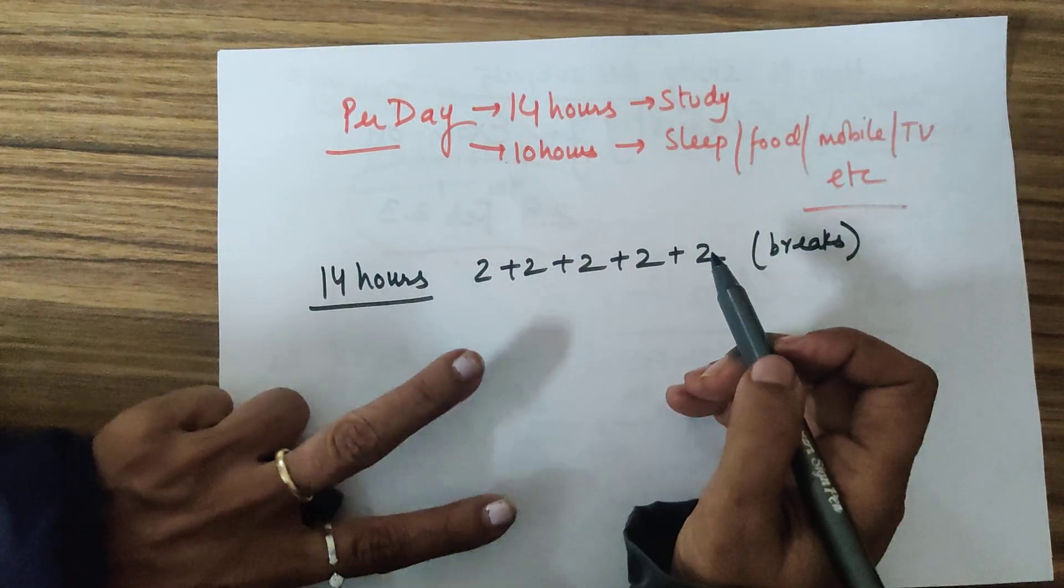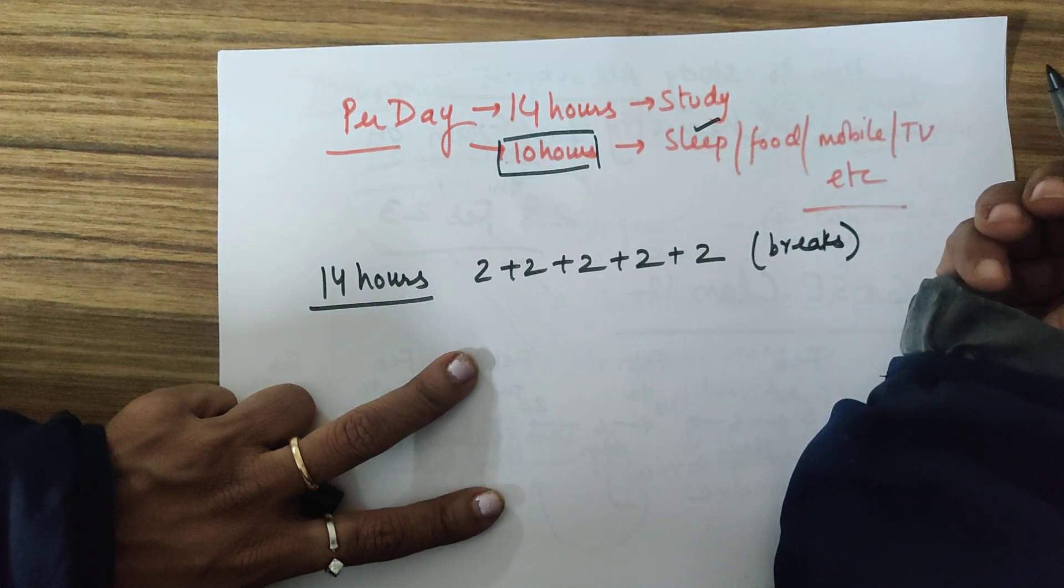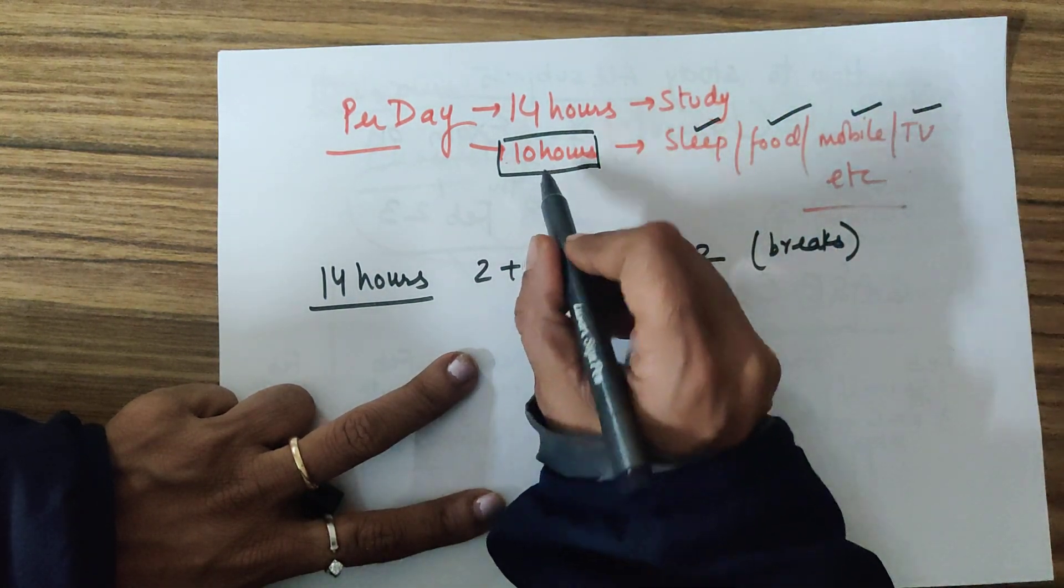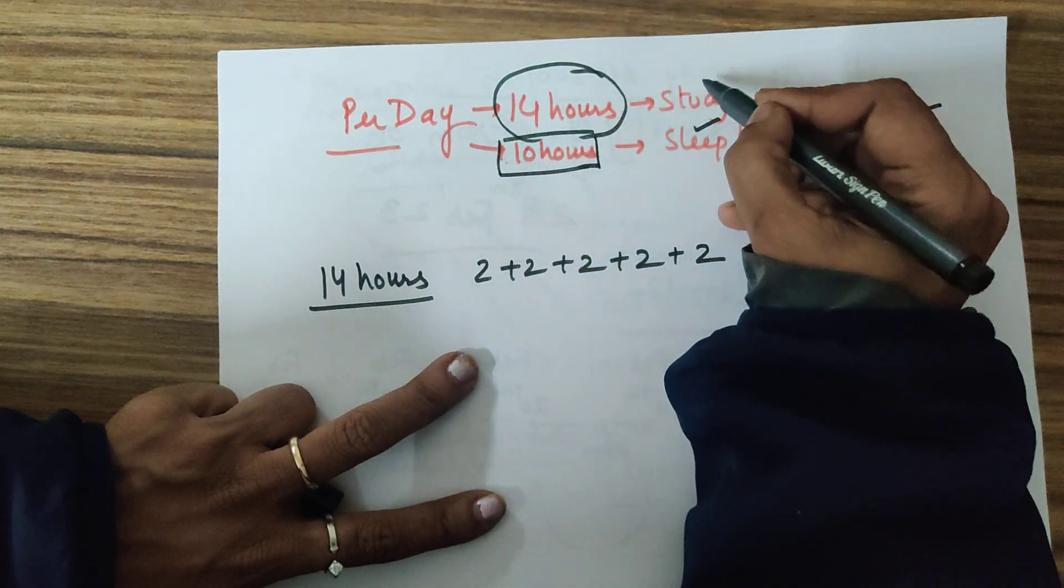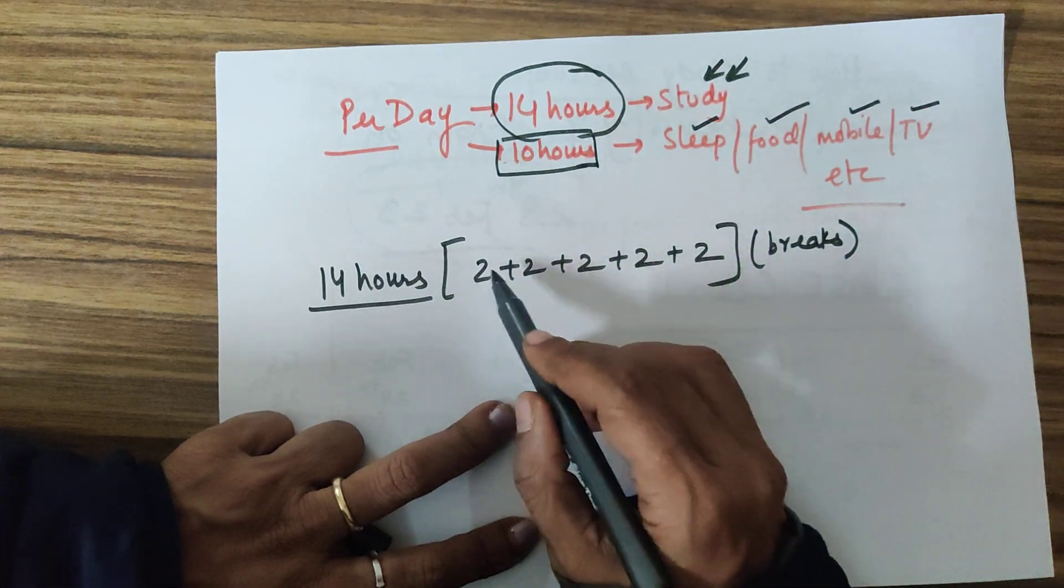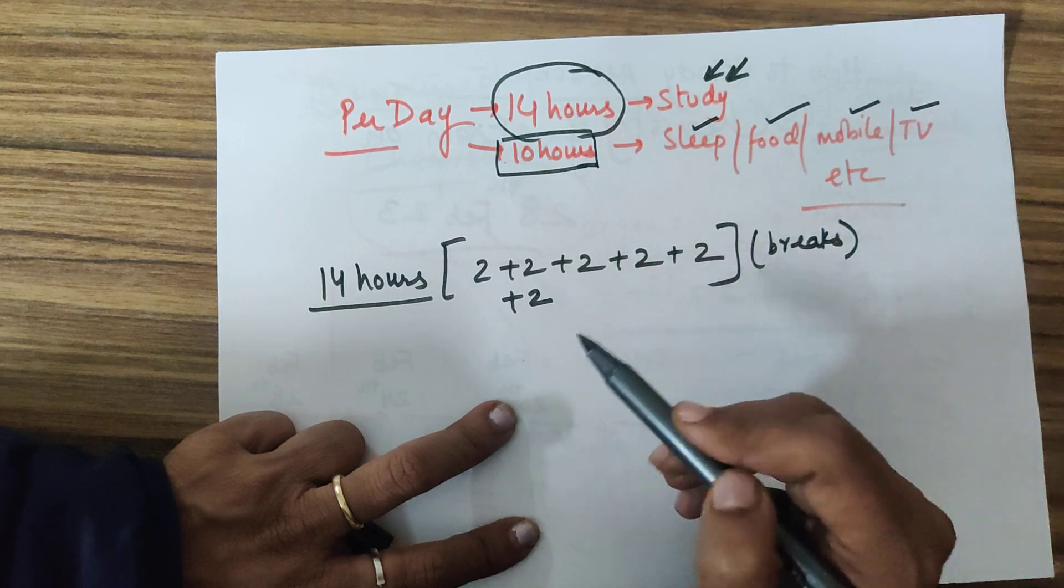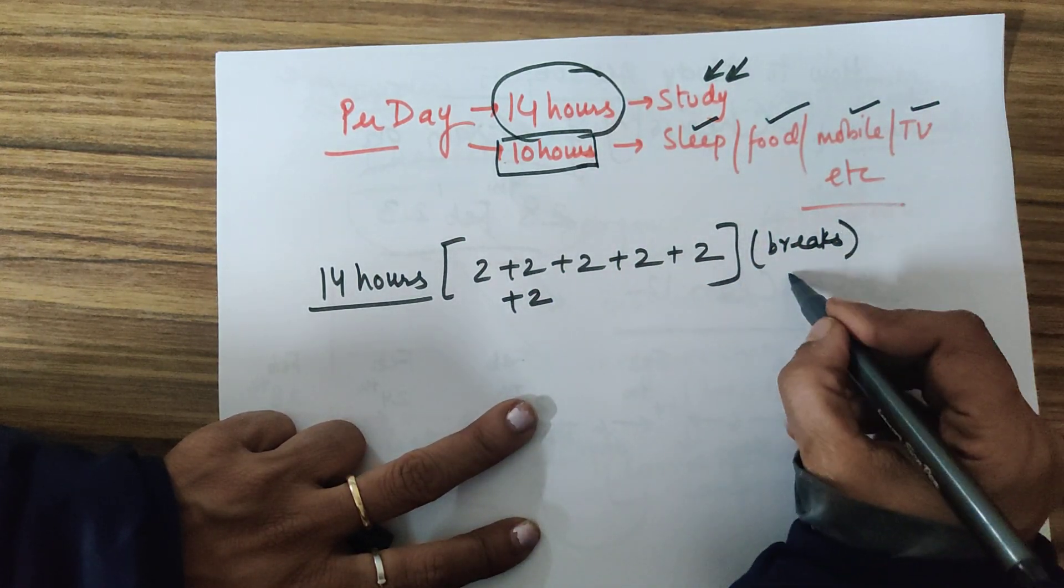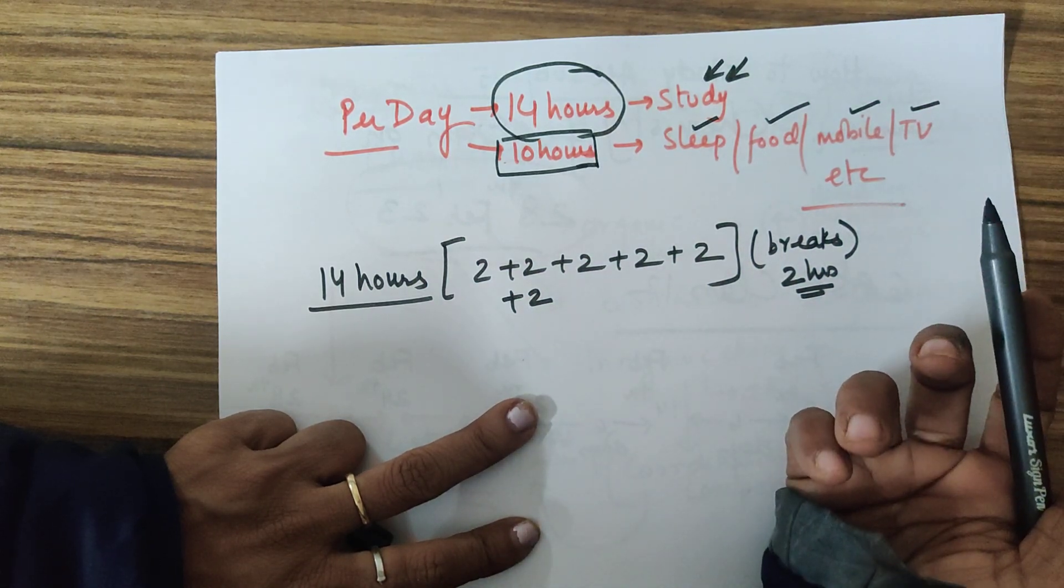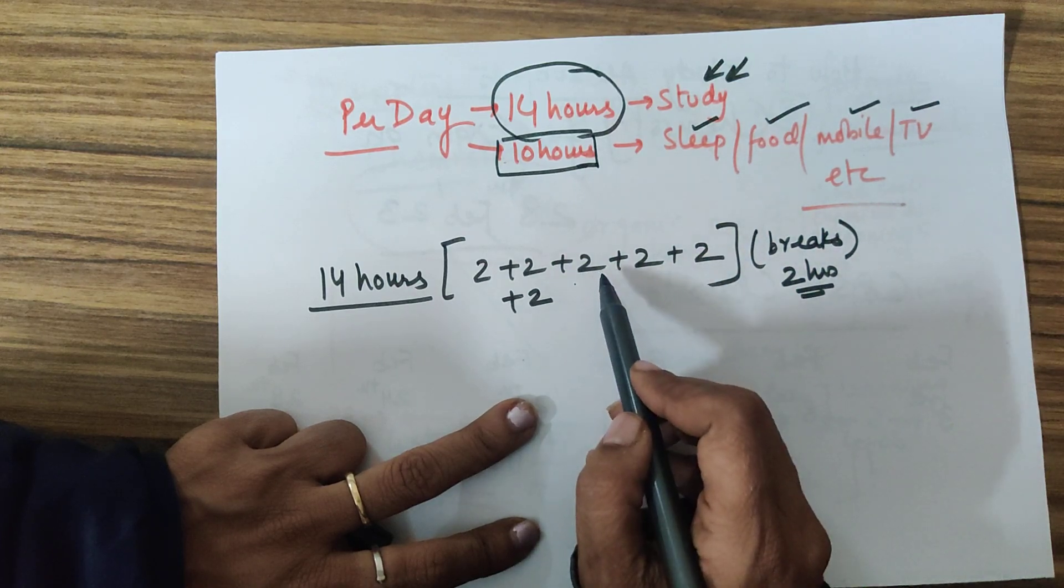Now per day timetable, how to happen. Per day you have 14 hours. 10 hours will go for your sleep, 8 hours which you need for food, family time, mobile, TV, whatsoever. You have 15-15 minutes, 5 times 15 minutes plus change over of subject.